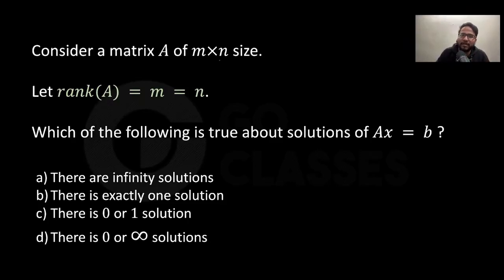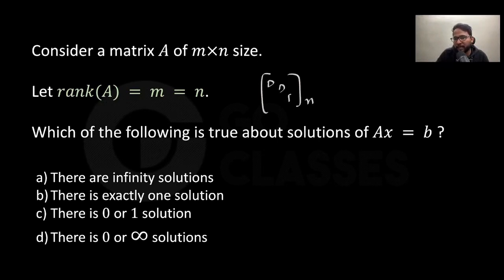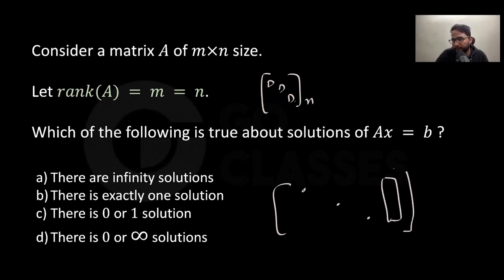Suppose A has size m×n. If m and n are both equal, then rank is n, which means every column has a pivot and every row has a pivot. Since every row and every column has a pivot, there is exactly one unique solution.